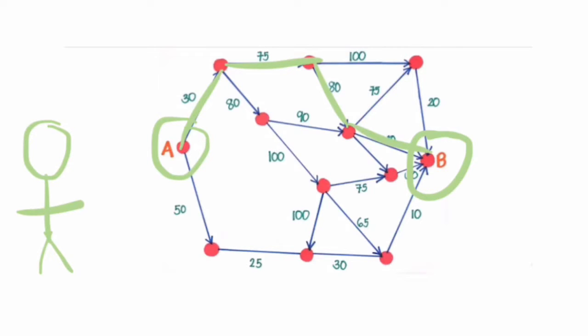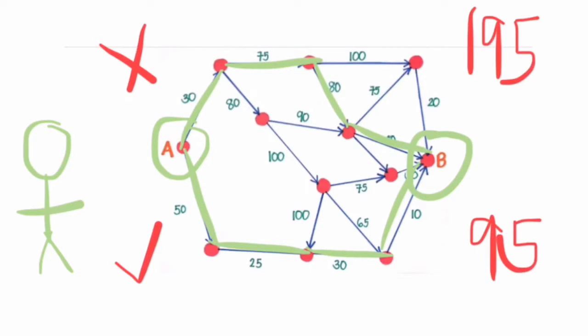While on the right lane, let's start again from vertex A up until vertex B, that has a unit of 50, 25, 30, and 10, with a total of 95. Based on the results of each lane, I would prefer to take the right lane than the left one, since it resulted with the smallest weight. That's how greedy algorithm works. Now, let's head on to the next lesson.